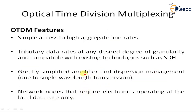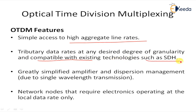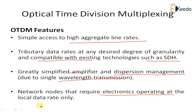Some of the features of OTDM: First, simple access to high aggregate line rate, providing higher line rates. Tributary data rates at any desired degree of granularity, and compatible with existing technologies such as SONET or SDH. Greatly simplified amplifier and dispersion management due to single wavelength transmission. Network nodes require electronics operating only at the local data rate.